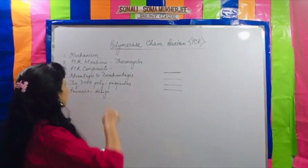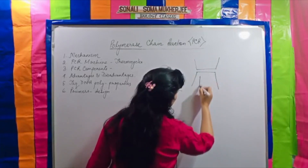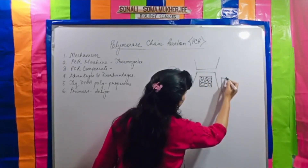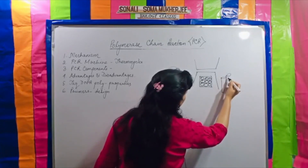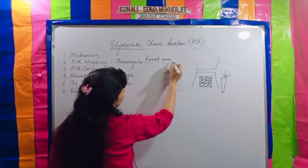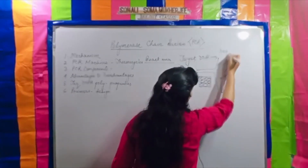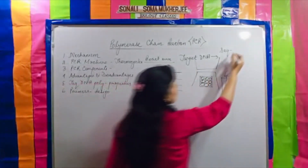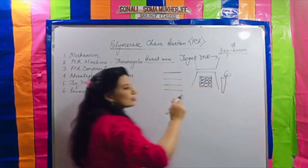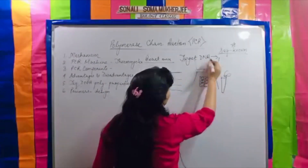The thermocycler is the machine used for PCR. I am drawing a rough structure — it has wells where PCR tubes with lids are placed. The reaction mixture loaded into these wells contains the target DNA that is going to be amplified. The target DNA sequence must be a known sequence — without this, we cannot carry out PCR. Knowing the sequence is a very important criterion.